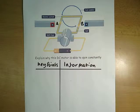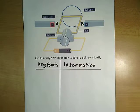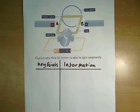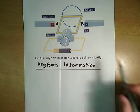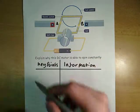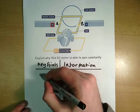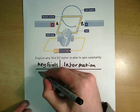We're going to be looking at a DC motor. I'm trying to answer this question explaining why it's able to spin constantly. So, the first thing we want to talk about is why is it moving at all? We're going to talk about the interaction between the coil and the magnet. Our first key point is going to be that interaction.